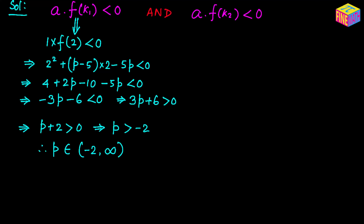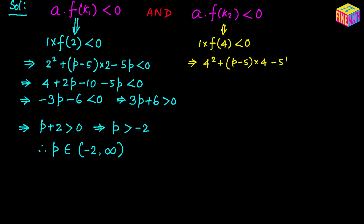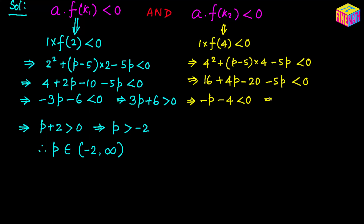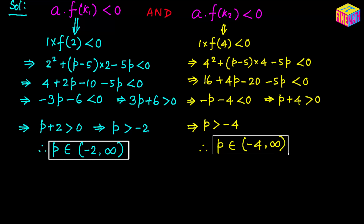For the second condition: 1·f(4) < 0, giving 4² + (p − 5)·4 − 5p < 0, which simplifies to 16 + 4p − 20 − 5p < 0, then −p − 4 < 0. Multiplying both sides by −1 (inequality flips): p + 4 > 0, so p > −4. The second solution set is p ∈ (−4, +∞).